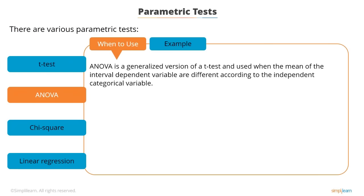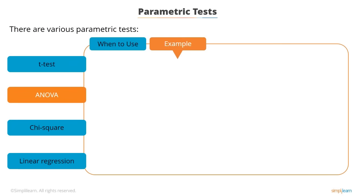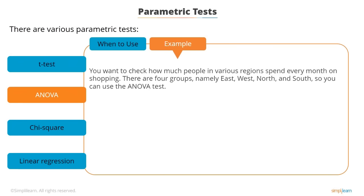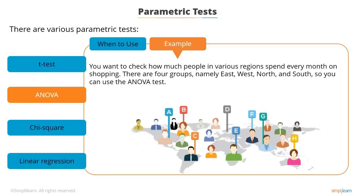ANOVA is a generalized version of the t-test, used when the mean of an interval dependent variable differs across categories of a categorical independent variable. When checking variance between two or more groups, we apply the ANOVA test. For example, to check how much people in various regions — east, west, north, and south — spend every month on shopping, the ANOVA test determines if the difference between the regions is significant or a statistical fluke.